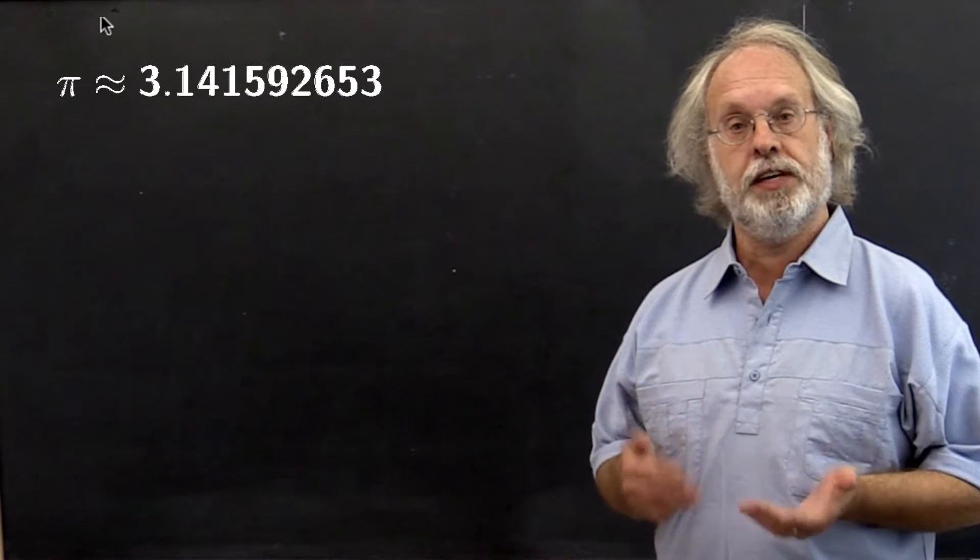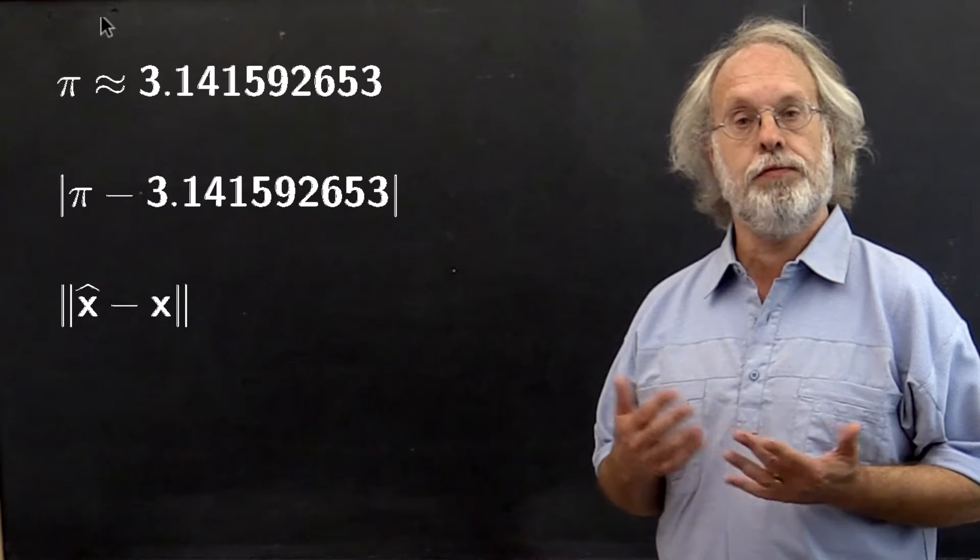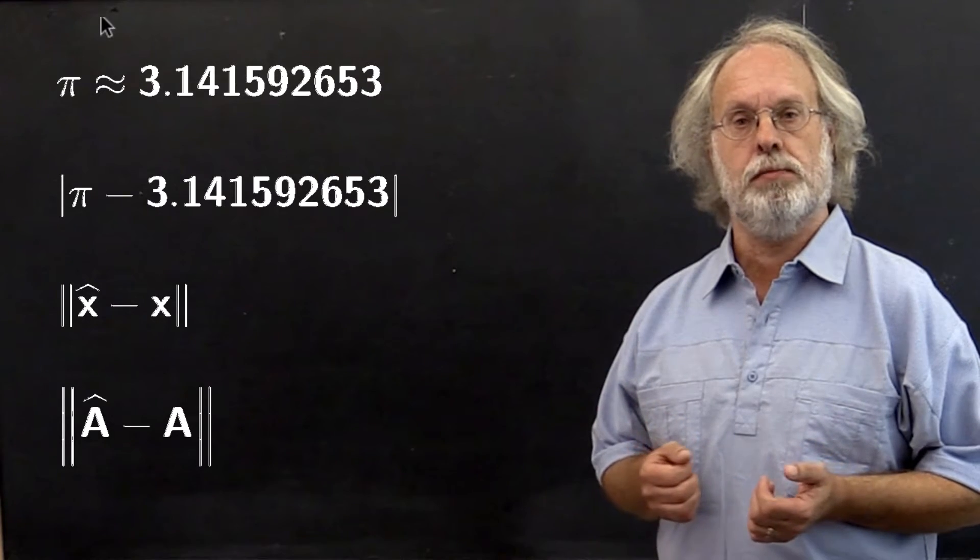When we store scalars, vectors, and matrices in the memory of a computer, we represent them using floating-point numbers. How do we measure the accuracy of these approximations?